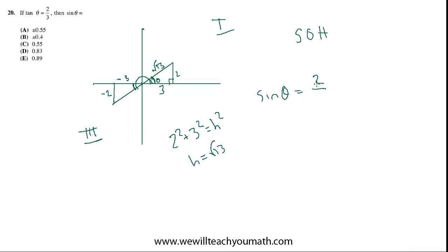So sine equals 2 over root 13, which equals, I'm putting that in my calculator, I get 0.55. So the temptation is to pick C, but the value of the sine in the first quadrant is positive. The value of the sine in the third quadrant is negative. So either one of those could be viable solutions to this problem. So we actually have to choose A, plus or minus 0.55.